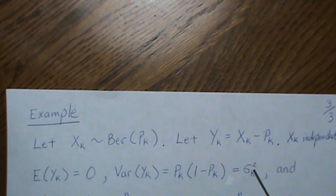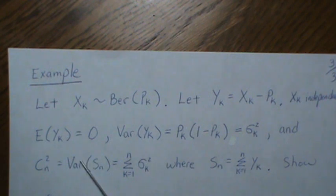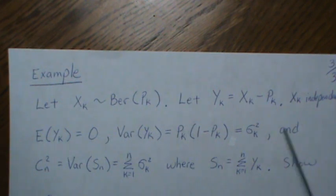We're going to let cn be the variance of Sn, and I should have written this Sn, which is the sum of the Yk's, so it's the sum of these variances.